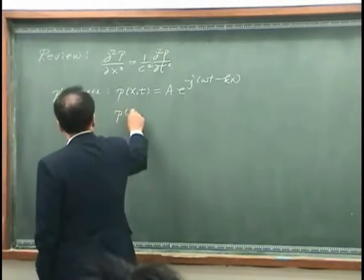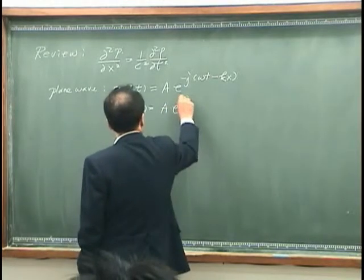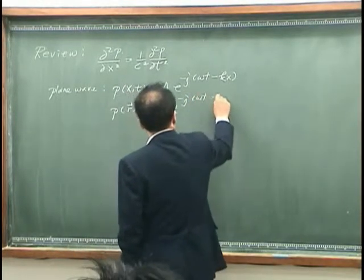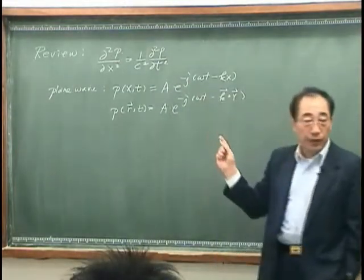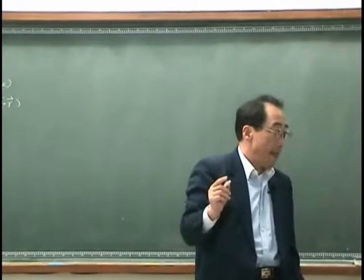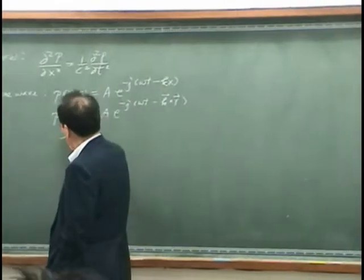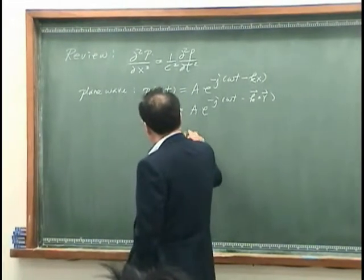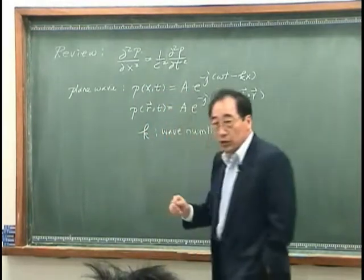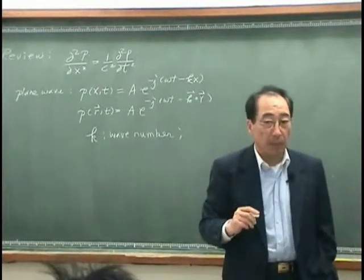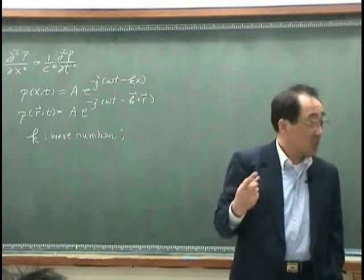Or we can generalize to the plane wave propagating in the wave vector k direction. And k is the wave number, which essentially expresses the number of waves per unit length. That is a scalar.